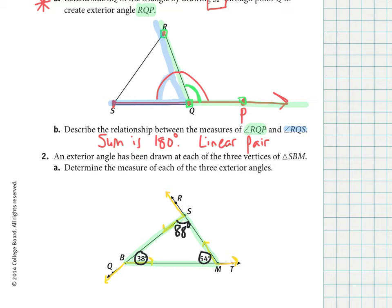Starting at the top: angle RSB is supplementary to the 88-degree angle because they form a linear pair, so 180 minus 88 gives a measure of 92 degrees. On the left, that angle is supplementary with the 38-degree angle, so 180 minus 38 gives a 142-degree angle. Finally, angle M is supplementary to the 54-degree angle, so 180 minus 54 gives us 126 degrees.